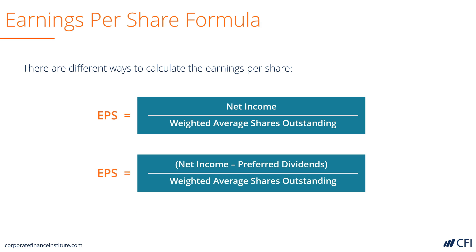Earnings per share for a company that has preferred shares would be equal to net income minus any preferred dividends that are paid to preferred shareholders, divided by weighted average shares outstanding in the period.